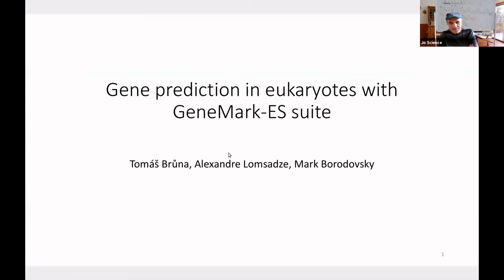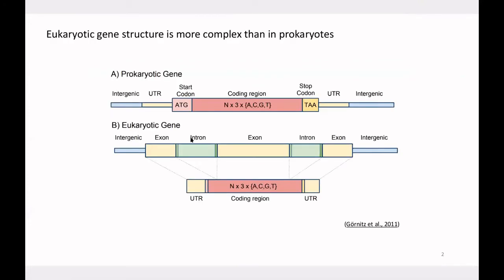I will talk about gene prediction in eukaryotes. While you've been introduced to prokaryotic gene prediction, I will now introduce how to do the same in eukaryotic genomes — and arguably this task is more complex. One reason is a different gene structure: while in prokaryotic genes the gene is defined by its start and stop, in eukaryotes genes are comprised of exons and introns. The final gene product is comprised only of exons; introns are spliced out between transcription and translation.